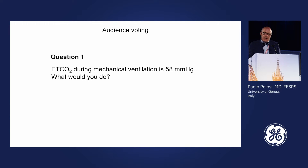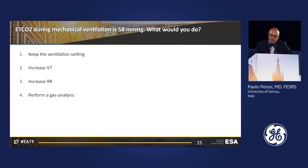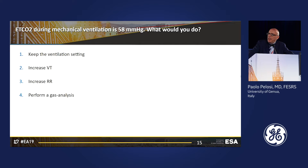Question one: the end-tidal CO2 in this patient is around 58 after 10 minutes of mechanical ventilation. What do you do? A: keep the ventilation settings; B: increase the tidal volume; C: increase the respiratory rate; or D: perform an arterial blood gas analysis. Please vote.